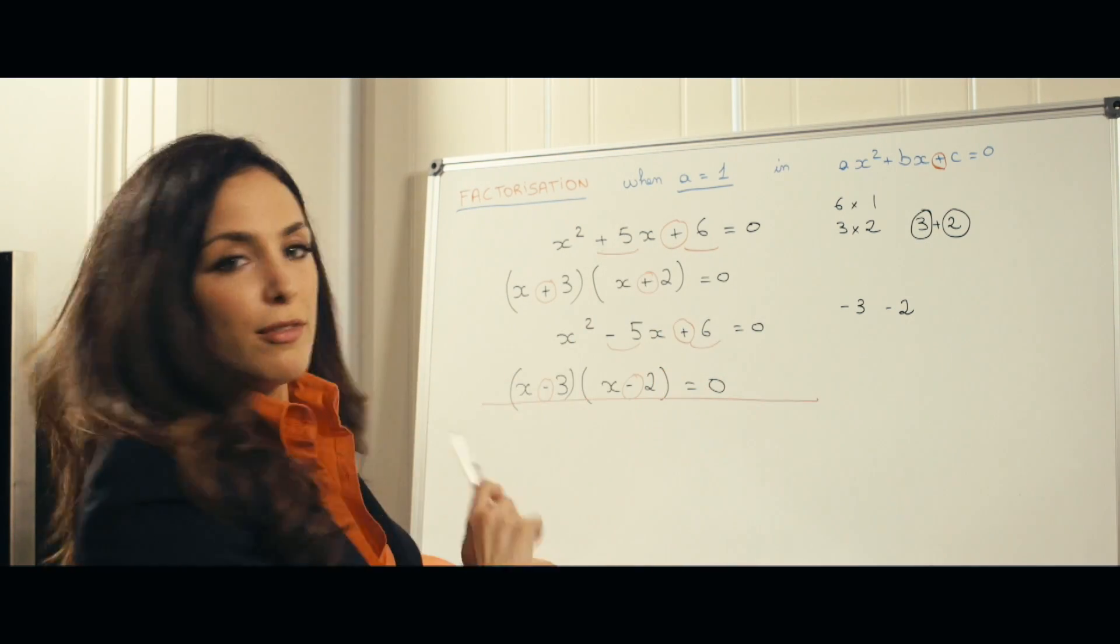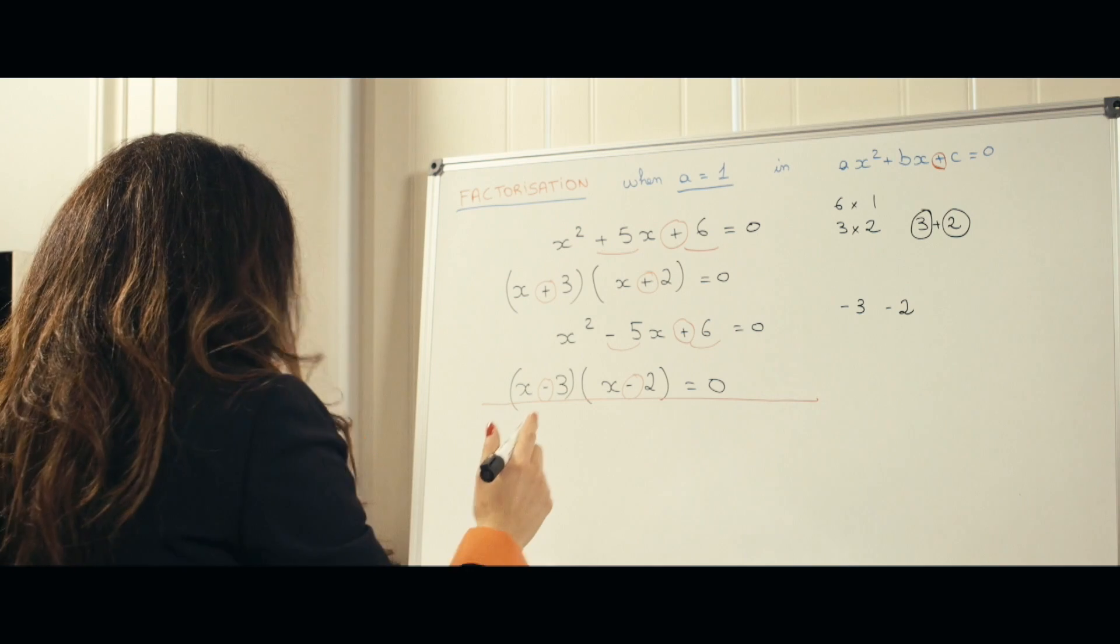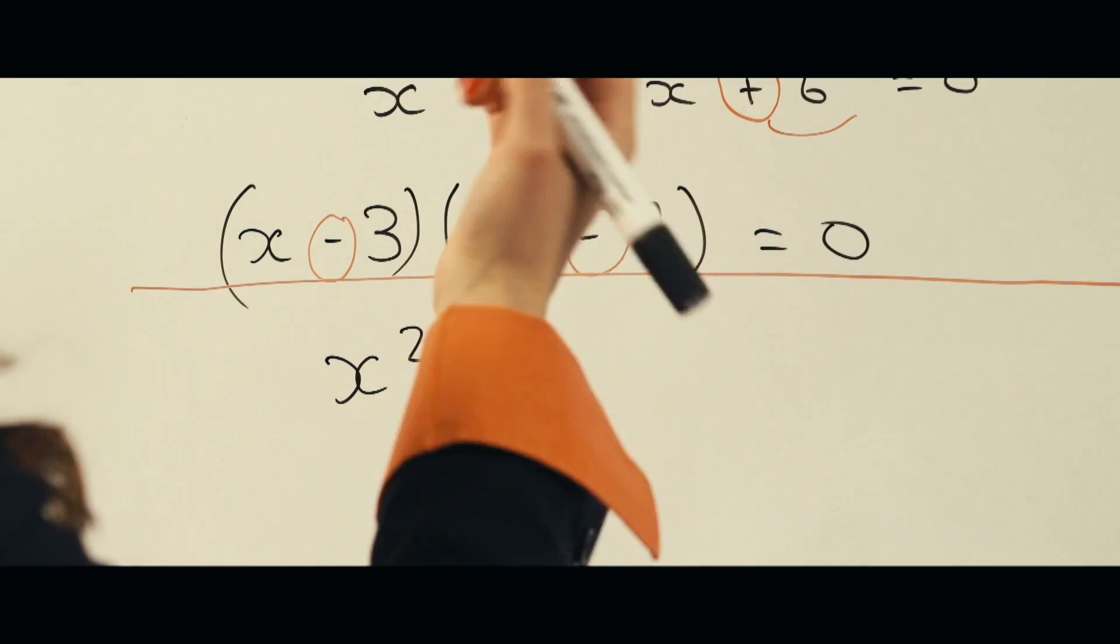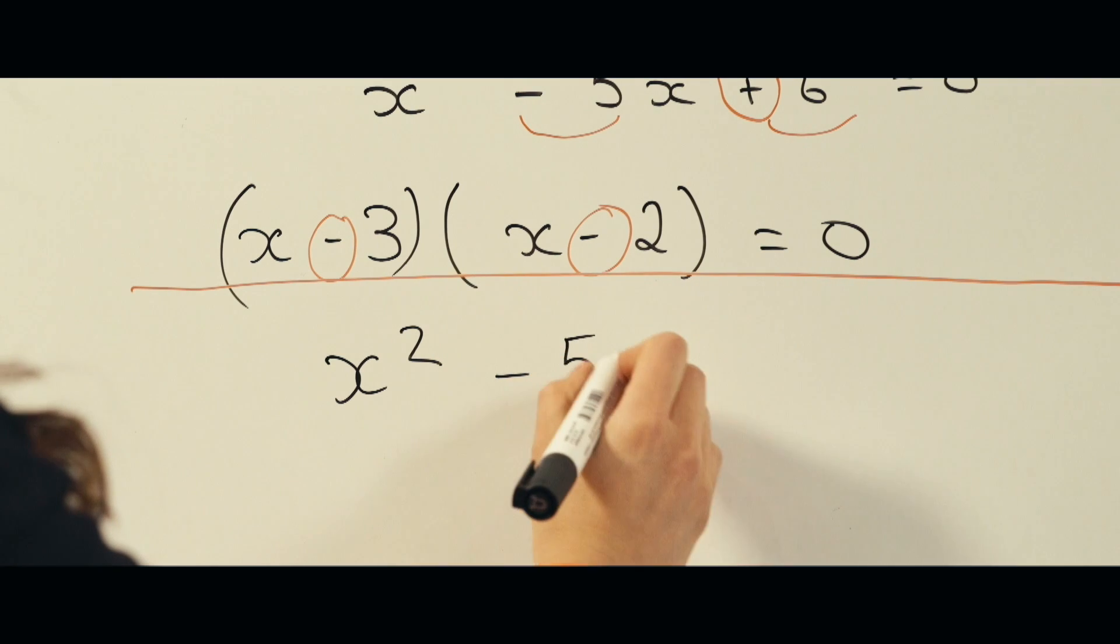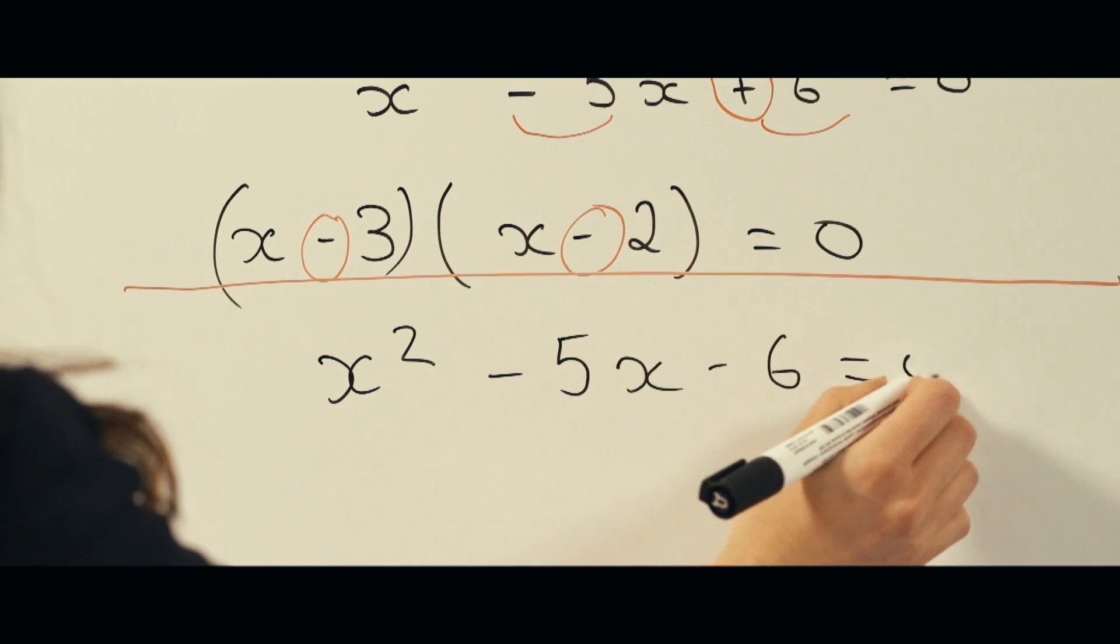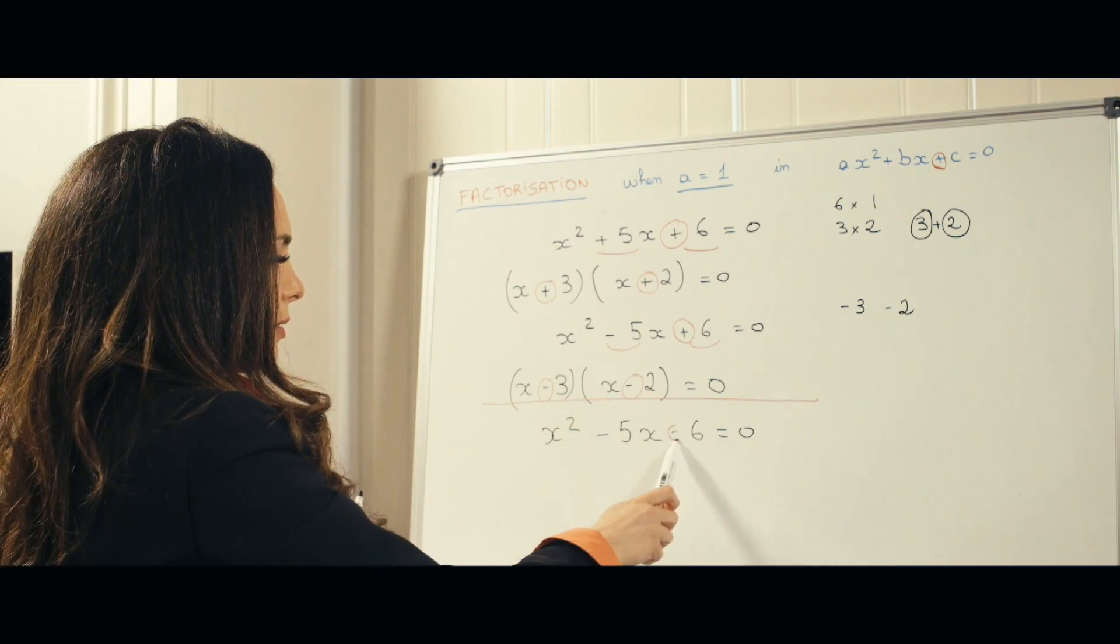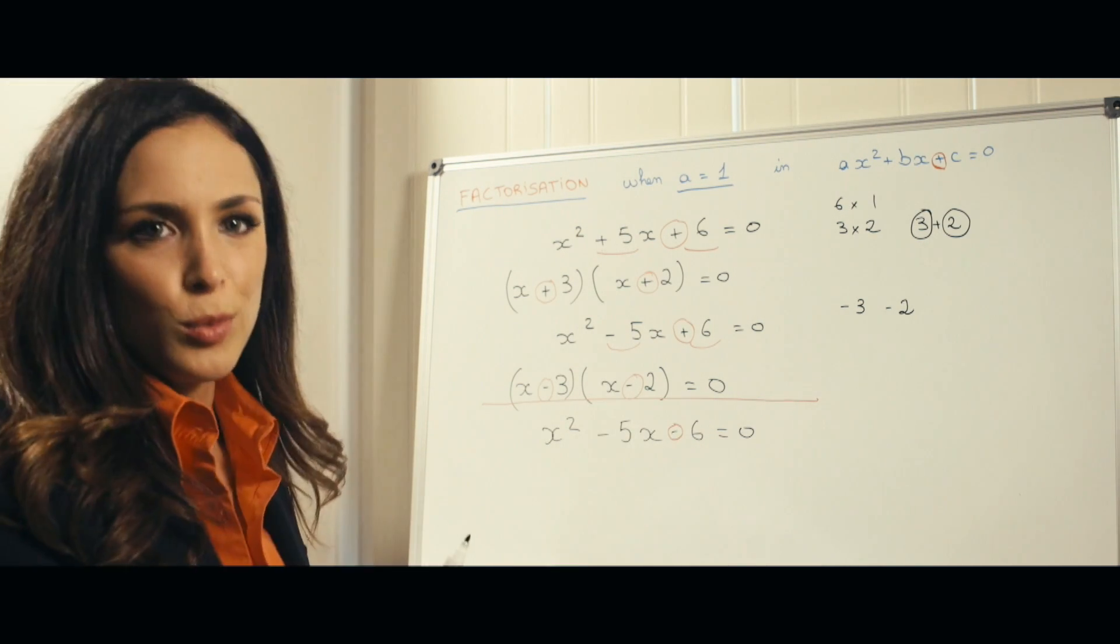Now, how about if it was negative, let's just do it now. So x squared, let's say minus 5x minus 6 is equal to 0. So in this case, you see, we have a minus. So I know that both signs will be different.